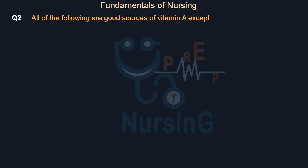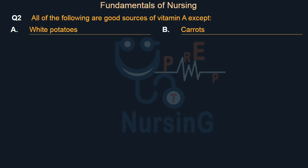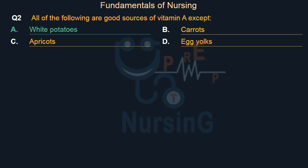All of the following are good sources of vitamin A except: Option A: White potatoes. Option B: Carrots. Option C: Apricots. Option D: Egg yolks. Right answer is Option A: White potatoes.